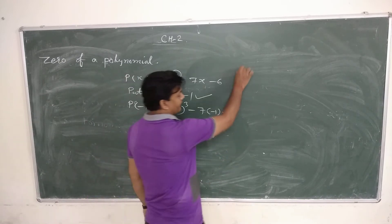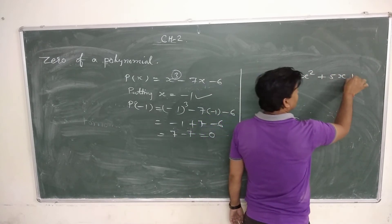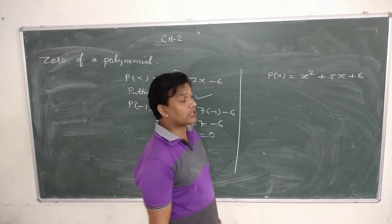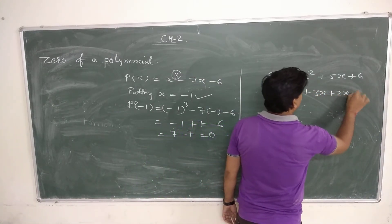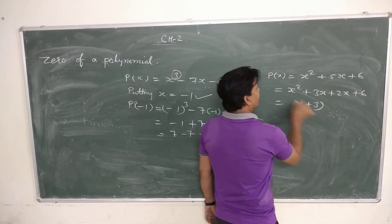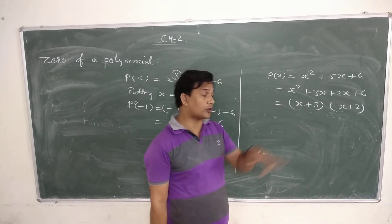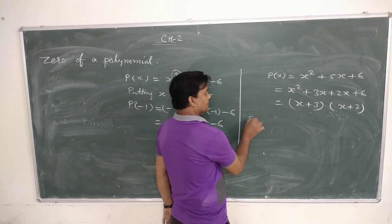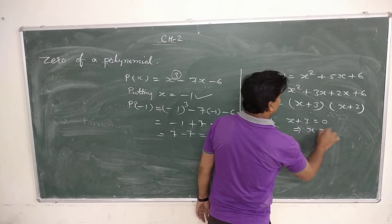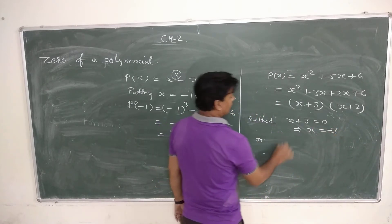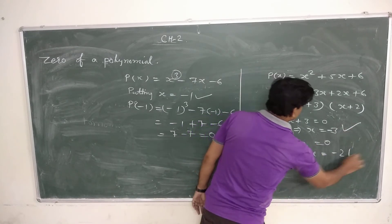If we have a quadratic polynomial like x squared plus 5x plus 6, the number of zeros is 2. Using the middle term splitting method, we can calculate them: x squared plus 5x plus 6 equals (x plus 3)(x plus 2). Setting each bracket to zero: x plus 3 = 0 gives x = minus 3, and x plus 2 = 0 gives x = minus 2. These are the two zeros.